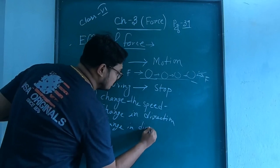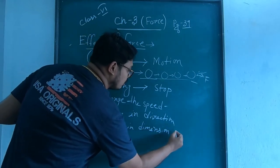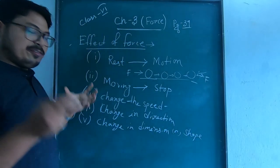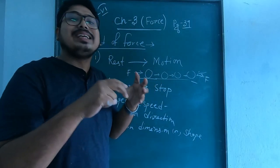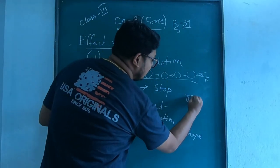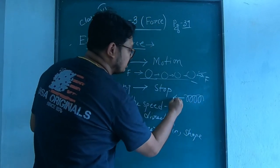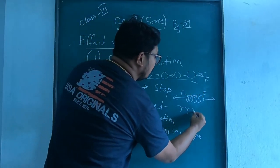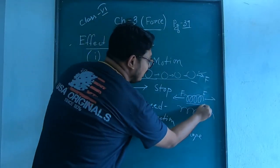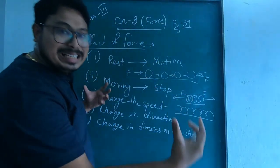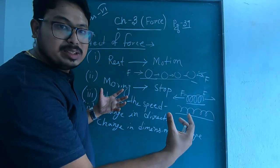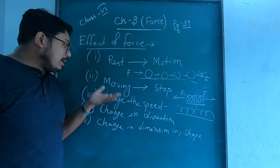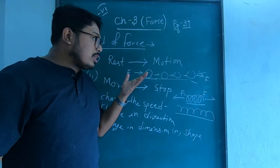Another effect of force is change in dimension or shape. If we apply force to a body, its dimension or shape can be changed. For example, if you have a spring and you stretch it in one direction, its length will increase. So we can change the dimension and shape of an object by applying force.